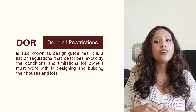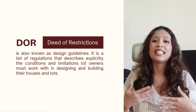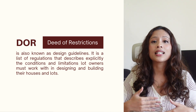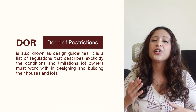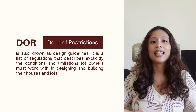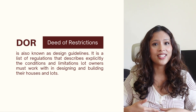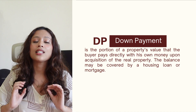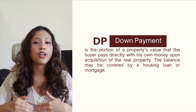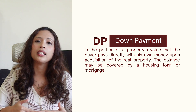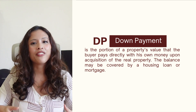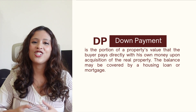DOR, for Deed of Restrictions, is also known as Design Guidelines. It is a list of regulations that describes explicitly the conditions and limitations lot owners must work with in designing and building their houses and lots. DP, for Down Payment, is the portion of a property's value that the buyer pays directly with his own money upon acquisition of the real property. The balance may be covered by a housing loan or mortgage.